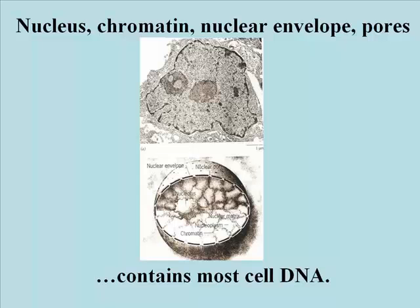This double membrane is called the nuclear envelope, and the nucleus itself contains chromatin — DNA bound to proteins. This chromatin is embedded in a nuclear matrix surrounded by nucleoplasm.